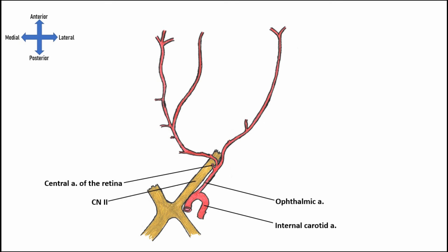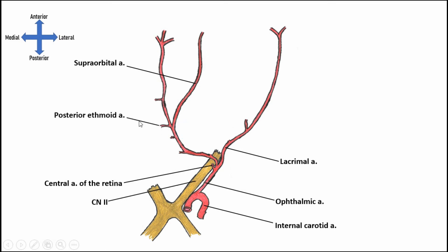Inside the orbit, on the lateral side is the lacrimal artery, which travels toward the lacrimal gland and gives off muscular branches — since the extraocular muscles require blood as well. Traveling more medially, the ophthalmic artery continues and gives off the long supraorbital artery, as well as the posterior and anterior ethmoidal arteries more medially. These pierce the ethmoid bone and supply blood to the superior portion of the nasal cavity, both posteriorly and anteriorly.